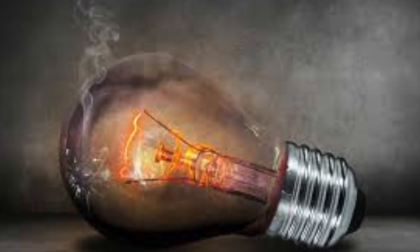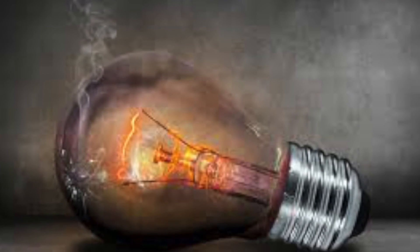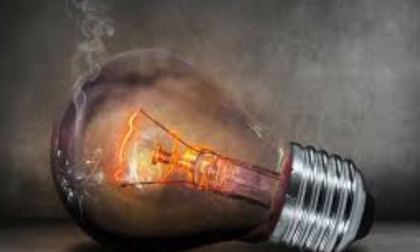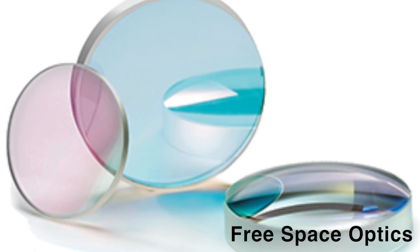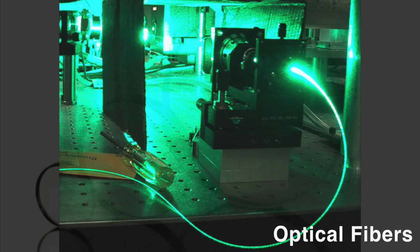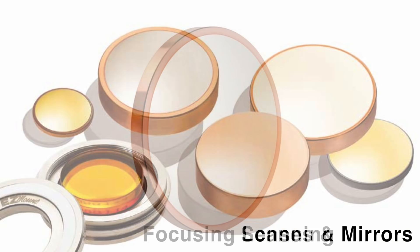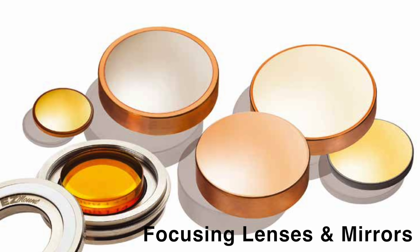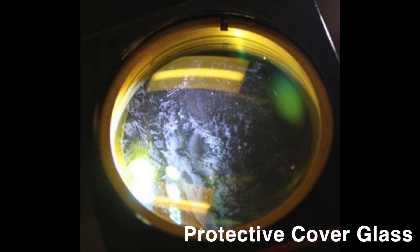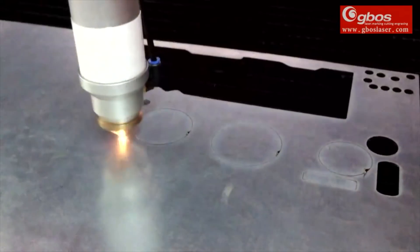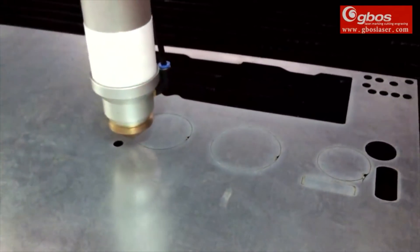A laser beam at the work surface is like a light bulb that degrades over time. Not only can the laser source degrade over time, but free space optics, optical fibers, beam shaping optics, scanning mirrors, focusing lenses and mirrors, and protective cover glass can heat up or become contaminated over time, which alters the laser beam characteristics at the work surface.